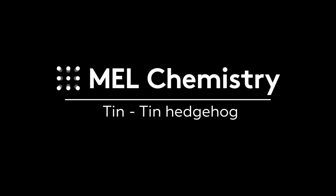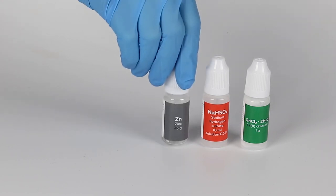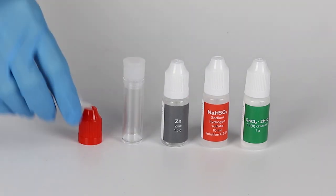For the tin hedgehog experiment, you will need tin chloride, sodium hydrogen sulfate solution, zinc, a vial, a red cap, and a tip.